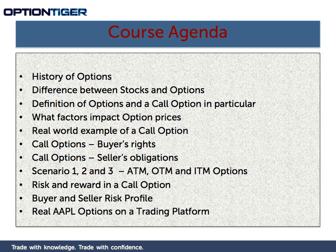Just like in stocks, you have a buyer and a seller, and the same is true with options. We're going to look at the differences between a buyer and a seller, which are very different from stocks as well. Although they have opposite positions, they have a very different set of rights and obligations. Then once we've looked at the real world example of a Call Option, we are going to play a few scenarios on a real estate deal — where you're buying a house but need some time, so you bought an option on that house to hold the price. We'll change a couple of things and play about three different scenarios so that you understand what at-the-money, out-of-the-money, and in-the-money options are.